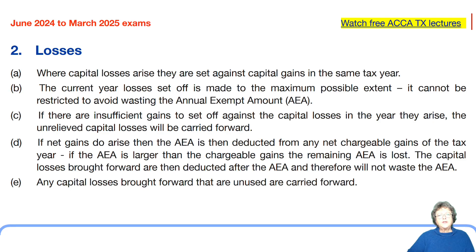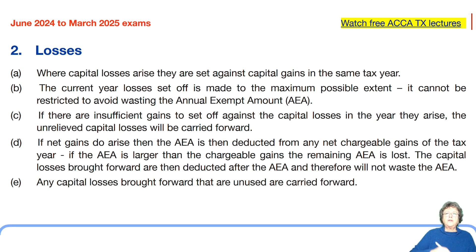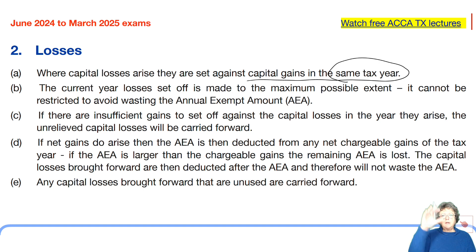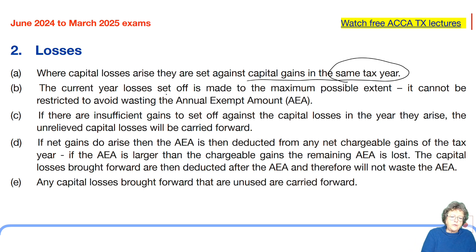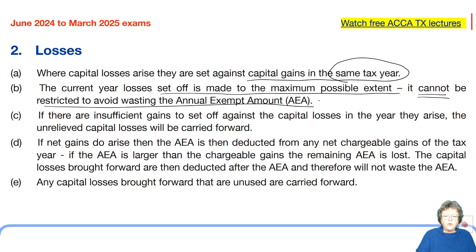The next section of this chapter discusses losses. Let's go through the rules and then apply those rules to an example. Where capital losses arise, they are set against capital gains in the same tax year — we've seen that already with the computation where we had two profits and a loss and they were netted off. They are set off to the maximum possible extent. You cannot restrict the set-off to avoid wasting the annual exemption. It's all or nothing.